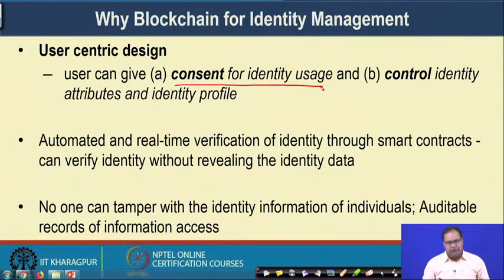Now let us see how blockchain can help us with identity management. First, blockchain can provide a user-centric design. Whenever as an individual you manage your identity attributes, it can become a burden, but blockchain can make it easy to manage the entire digital identity. With this user-centric design, the user can give consent for identity usage and have control over identity attributes and their identity profile. Consent and control are the two important terms in this user-centric design principle: as an end user you can give consent for specific purposes, and control determines which part of your identity profile is shared for authorization purposes. That is the first advantage of utilizing blockchain for digital identity management.